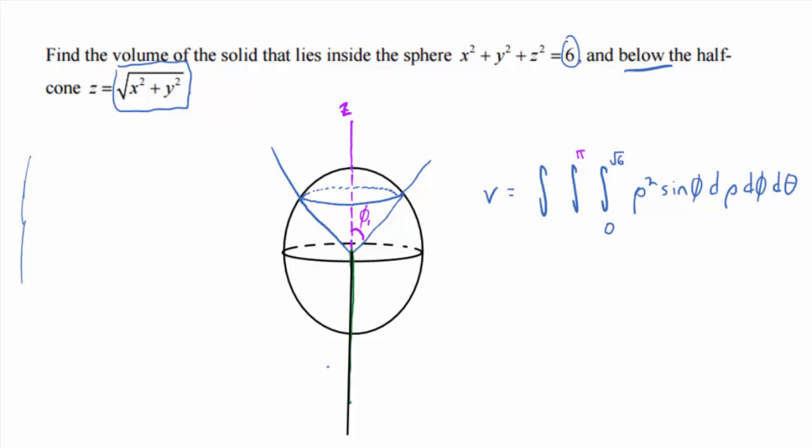The angle the side of the cone forms with the z-axis. So that's my phi one. That's what I don't know, right? I'm going to erase that in a second, so don't write that down. But I'm going to figure that out in a second. And what is theta going to run from?